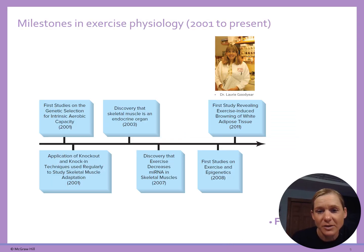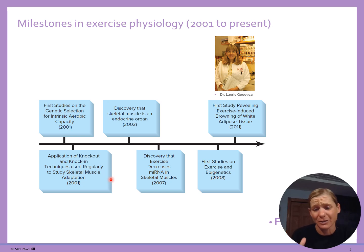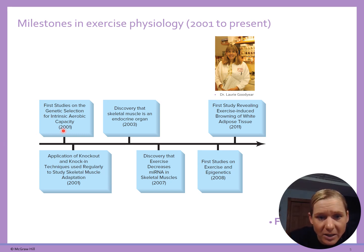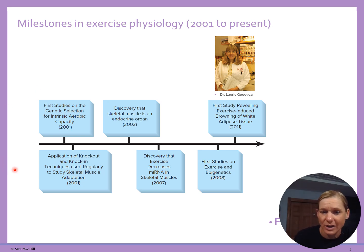From 2001 to present, we're starting to look at all sorts of different things, including genetics. The first studies in genetic selection helped us understand how genetics play a role in athletic performance.